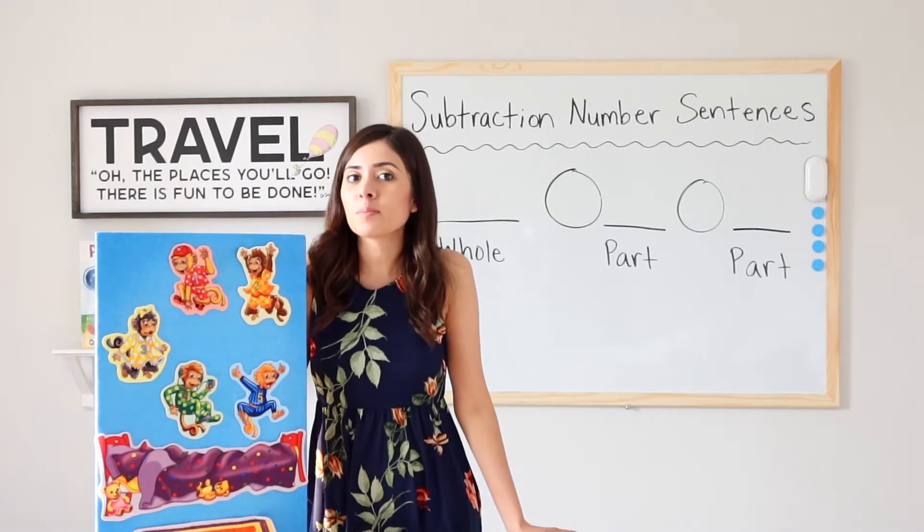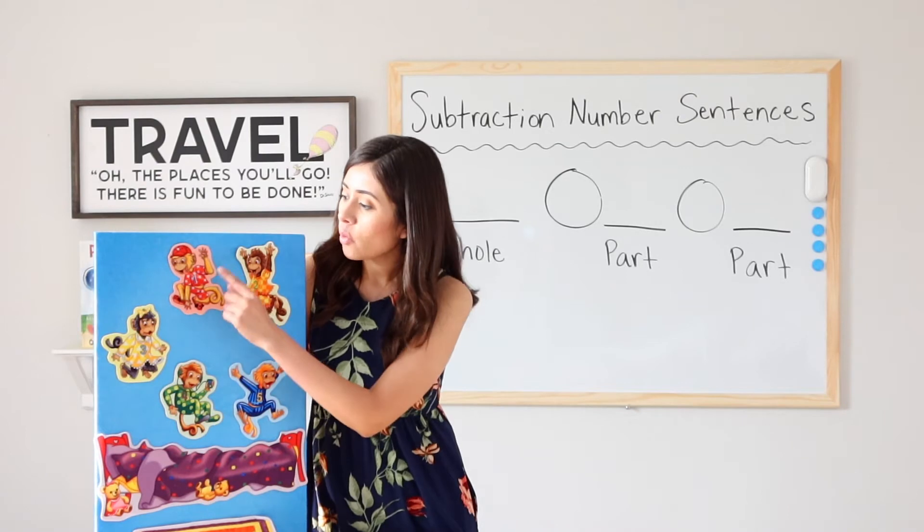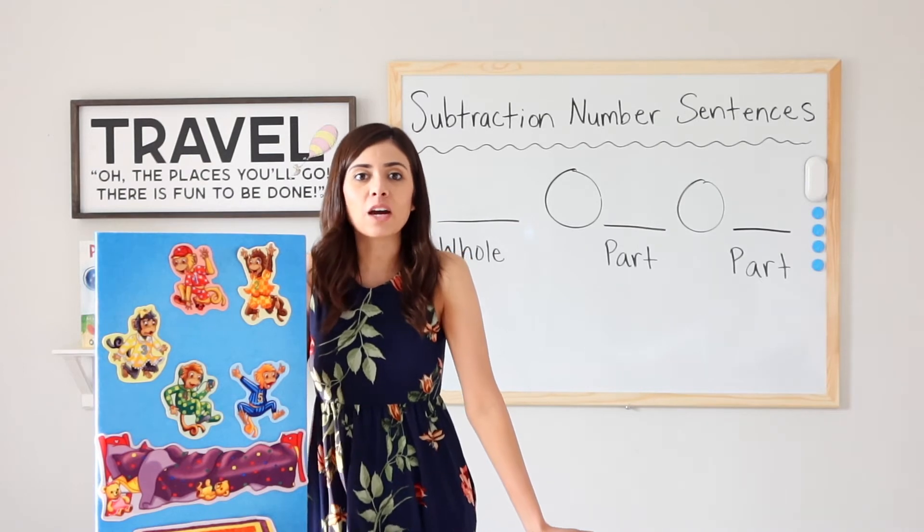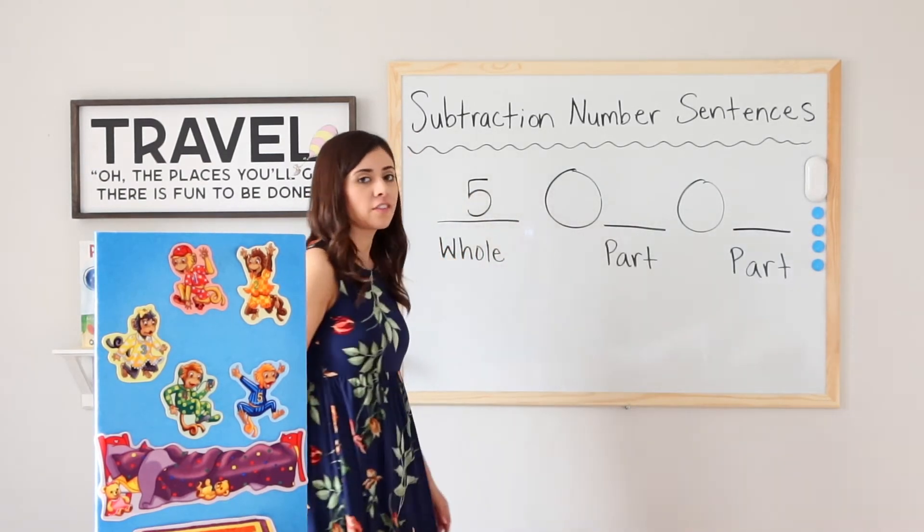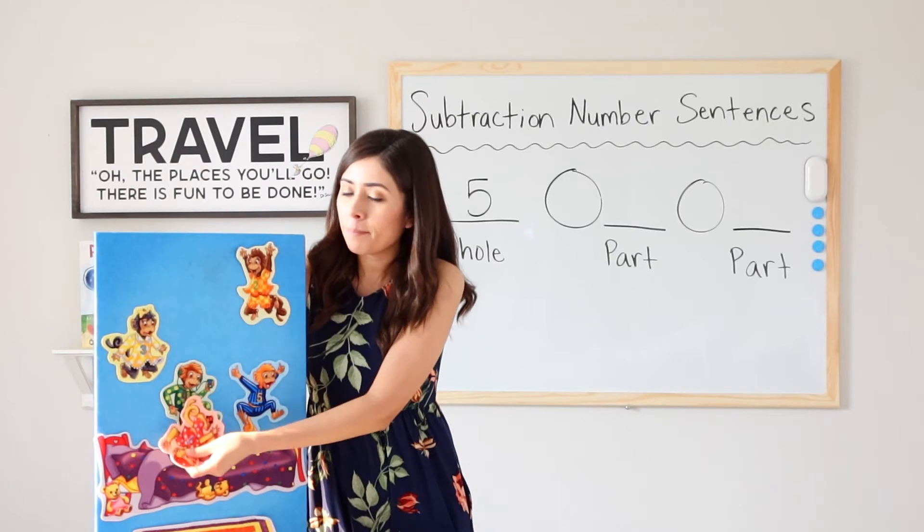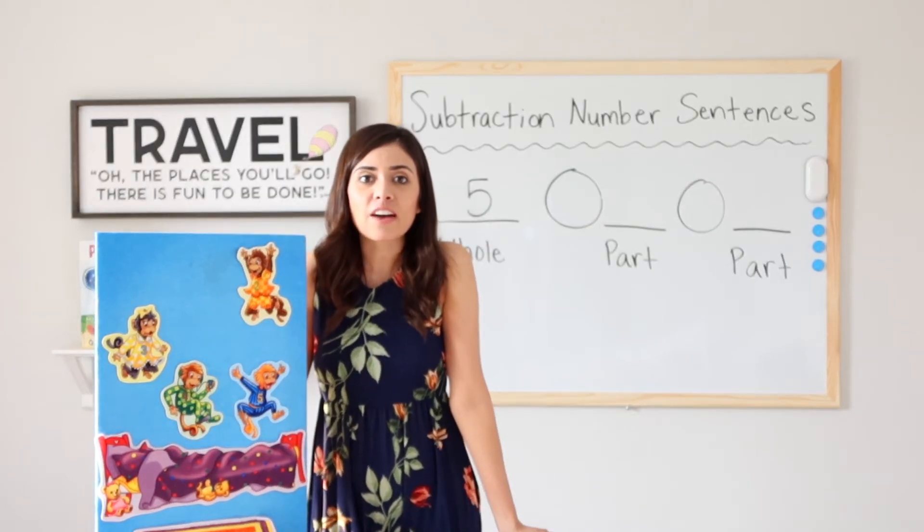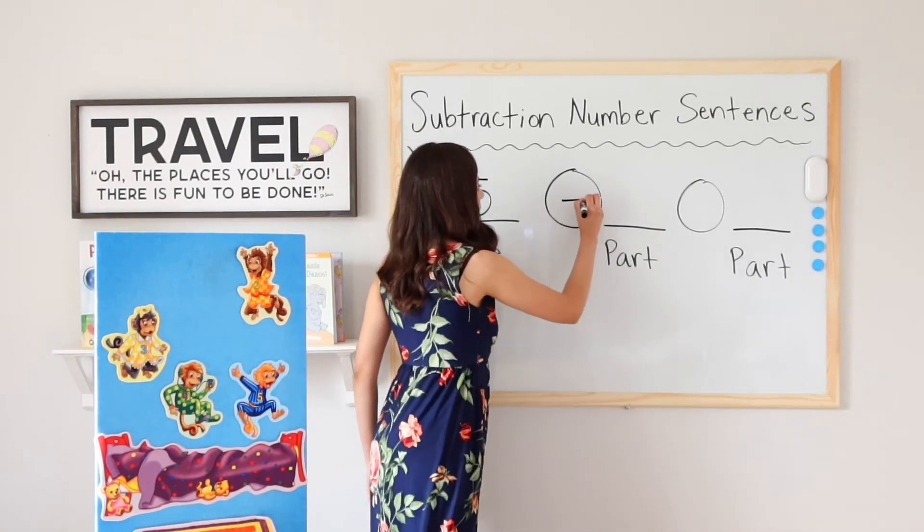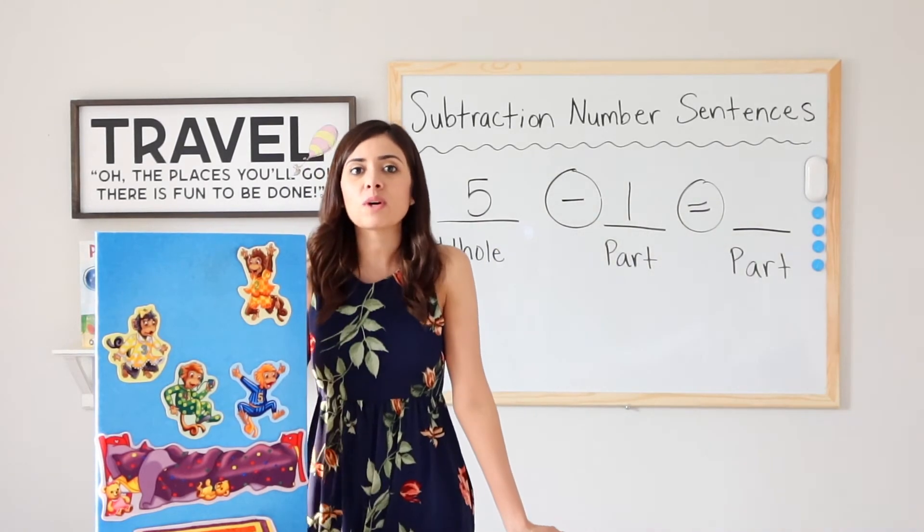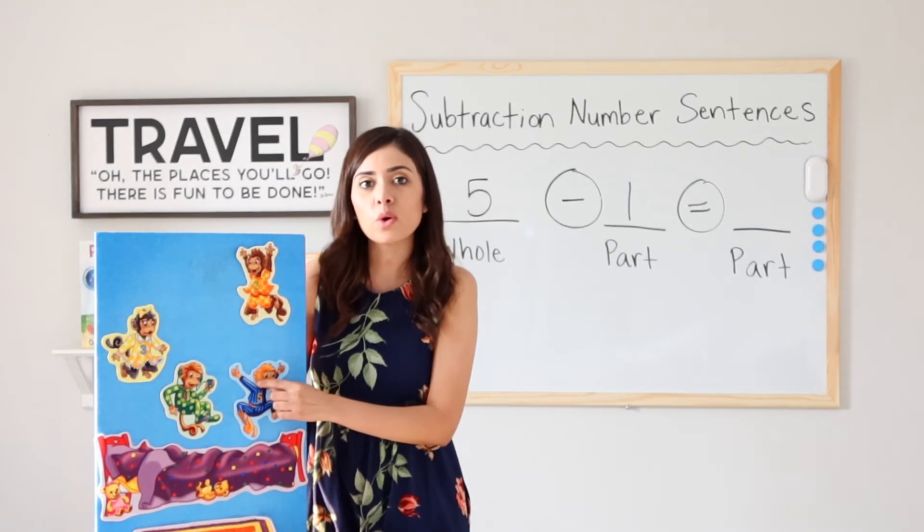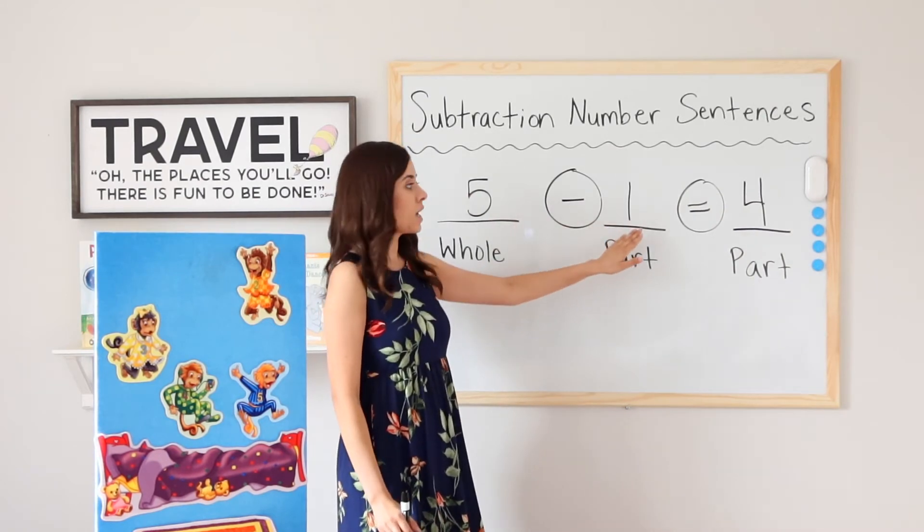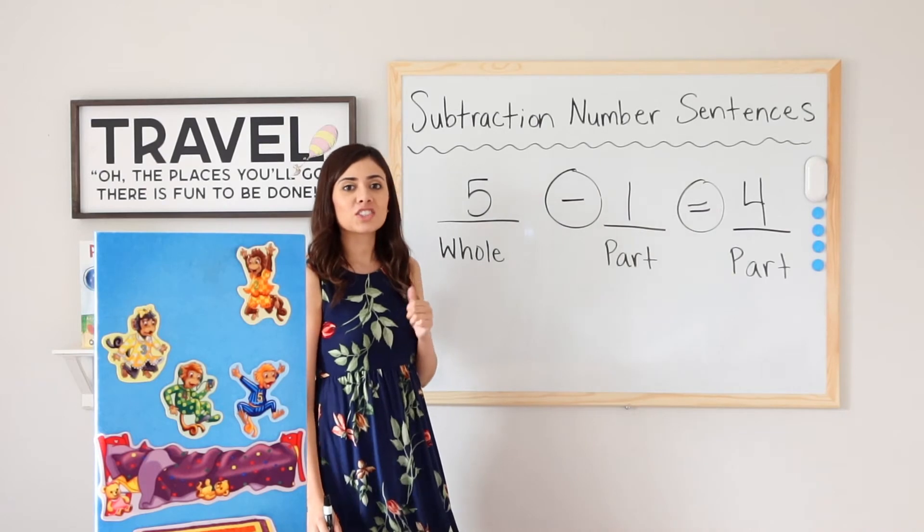So I think we all know this story pretty well. I have 5 little monkeys jumping on the bed. 1, 2, 3, 4, 5. Let's go ahead and write our whole of 5 down. 1 fell off and bumped his head. Boom. How many monkeys do I have left? So if we have 5 minus 1, that equals what? How many monkeys do I have left? 1, 2, 3, 4. 5 minus 1 equals 4. 4 is the difference. Great job, guys.